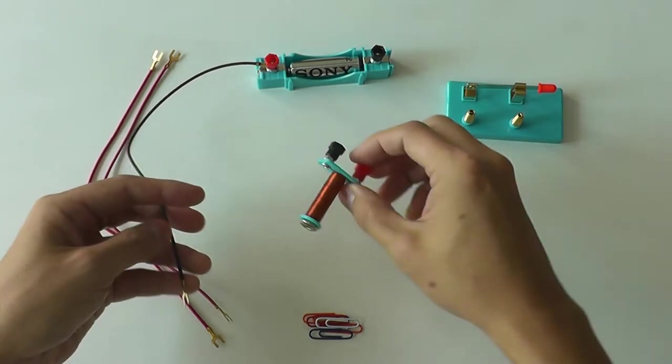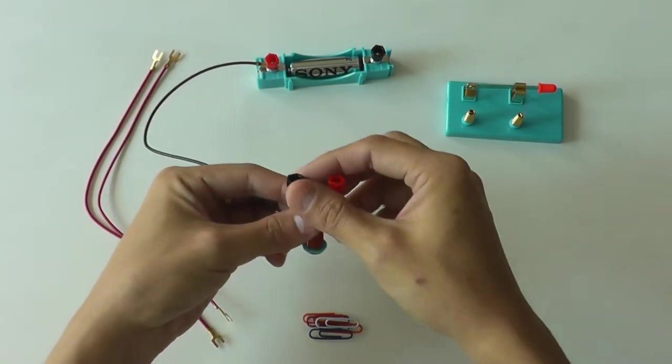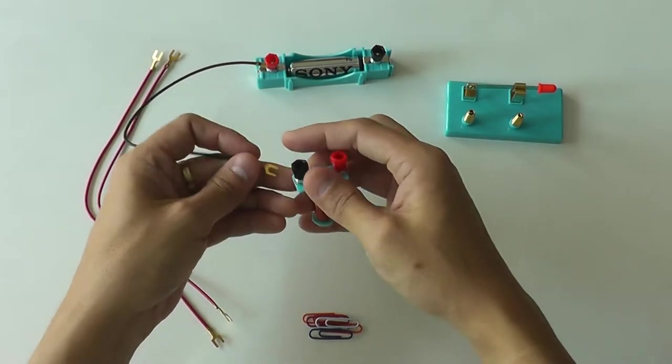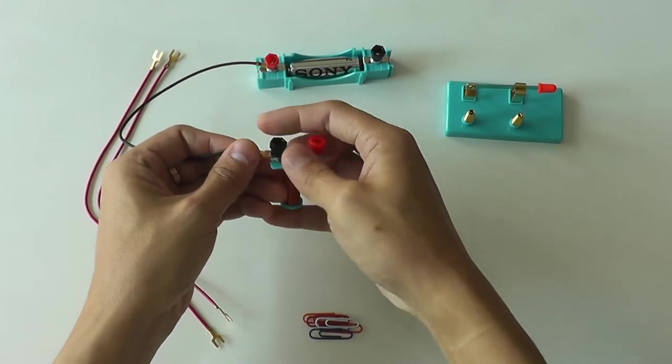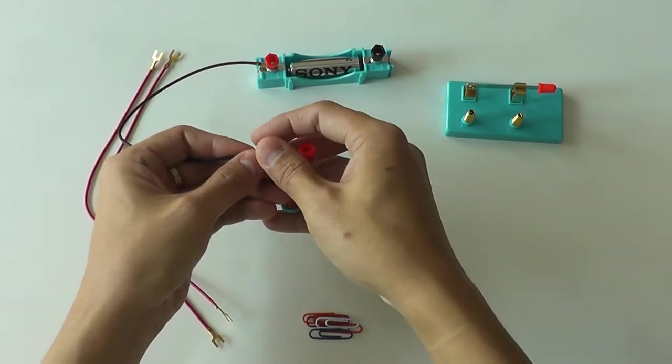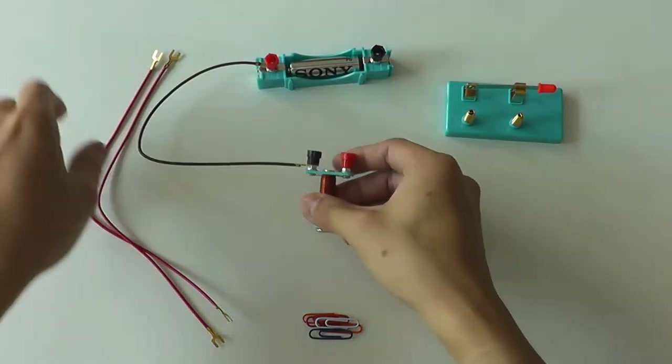You can see that there's a red knob and a black knob here. Actually, the polarity doesn't matter. So you just need to connect it in a series connection, which is a ring format.